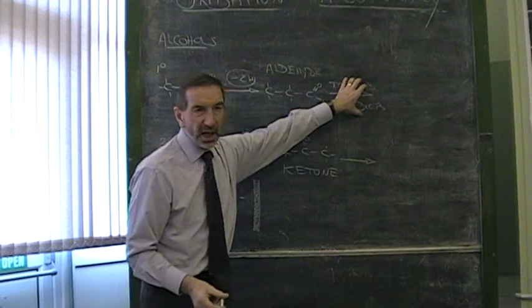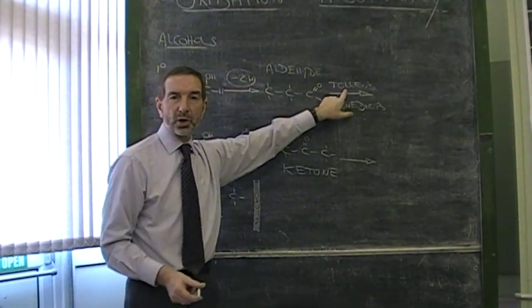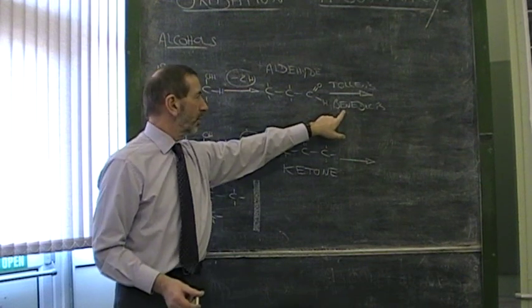When we added these oxidizing agents to aldehyde, yes, we saw these color changes. The Tollens produced a so-called silver mirror, and the Benedict's turned orange. Why?